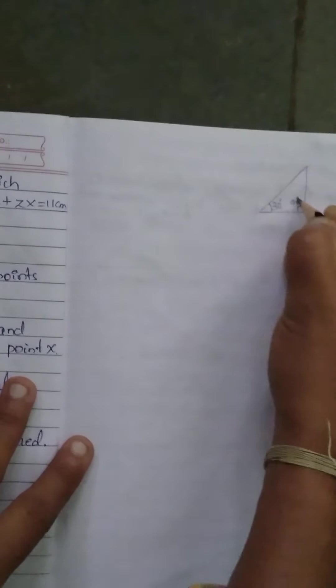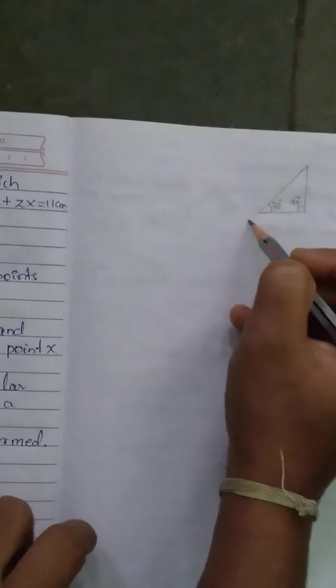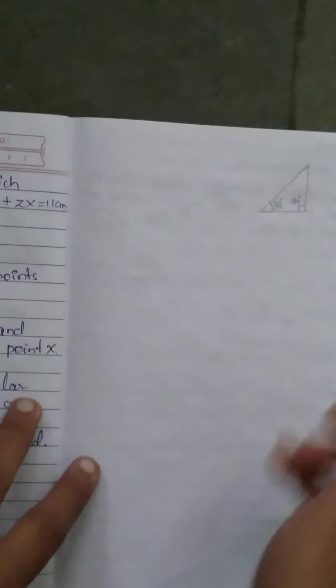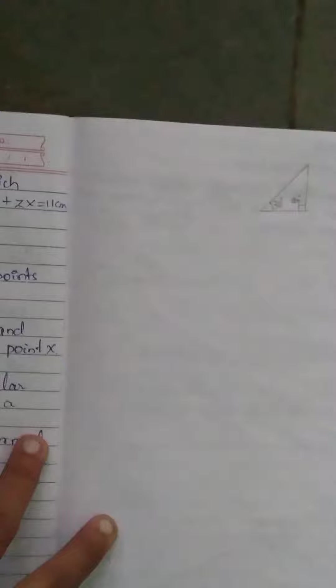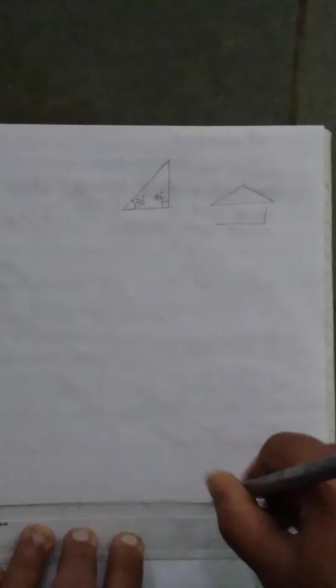Draw a line segment of 11 cm and mention these vertices as X and Y.